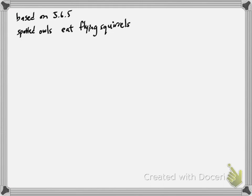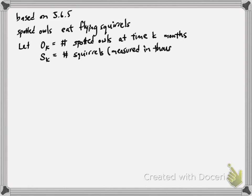The spotted owls are basically going to eat flying squirrels. Let O sub K be the number of spotted owls at time K, where K is measured in months. And S sub K is going to be the number of flying squirrels measured in thousands at time K.